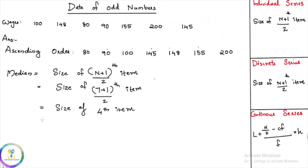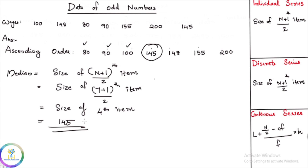Counting 1, 2, 3, 4 — the 4th item is 145. So the size of the 4th item is equal to 145. That is the median. If we change this, just like the median — if we change the median to 75, then we change the median accordingly.